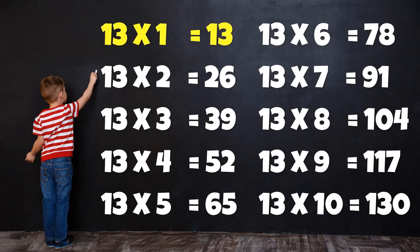Table of 13. 13 1's are 13. 13 2's are 26. 13 3's are 39. 13 4's are 52. 13 5's are 65. 13 6's are 78. 13 7's are 91. 13 8's are 104. 13 9's are 117. 13 10's are 130.